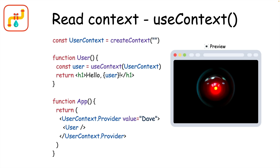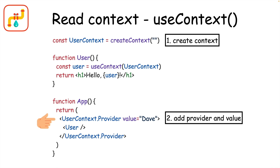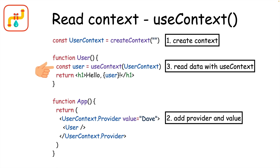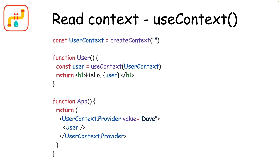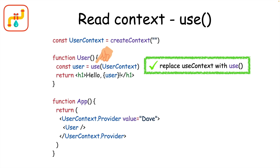To read data from React context before React 19, you used the useContext hook — like in this example where we're displaying the user's name. You first create your context, then wrap the context provider around the components that will use the context data, and then read that data with useContext by giving it the context object. But now, use can consume context for us as well. Just replace useContext with use and you're done.